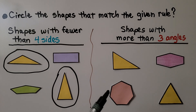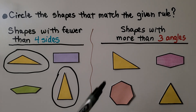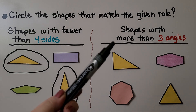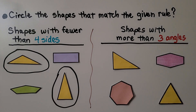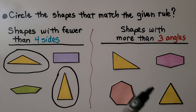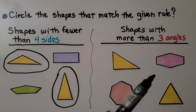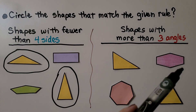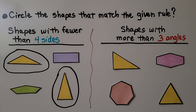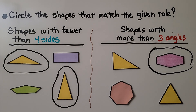This says shapes with more than three angles. The triangle has three angles — one, two, three — and it's supposed to have more than three, so it's not the triangles. What about this one? It's got one, two, three, four, five, six angles. So yes, that would be a shape with more than three angles — we circle that one.